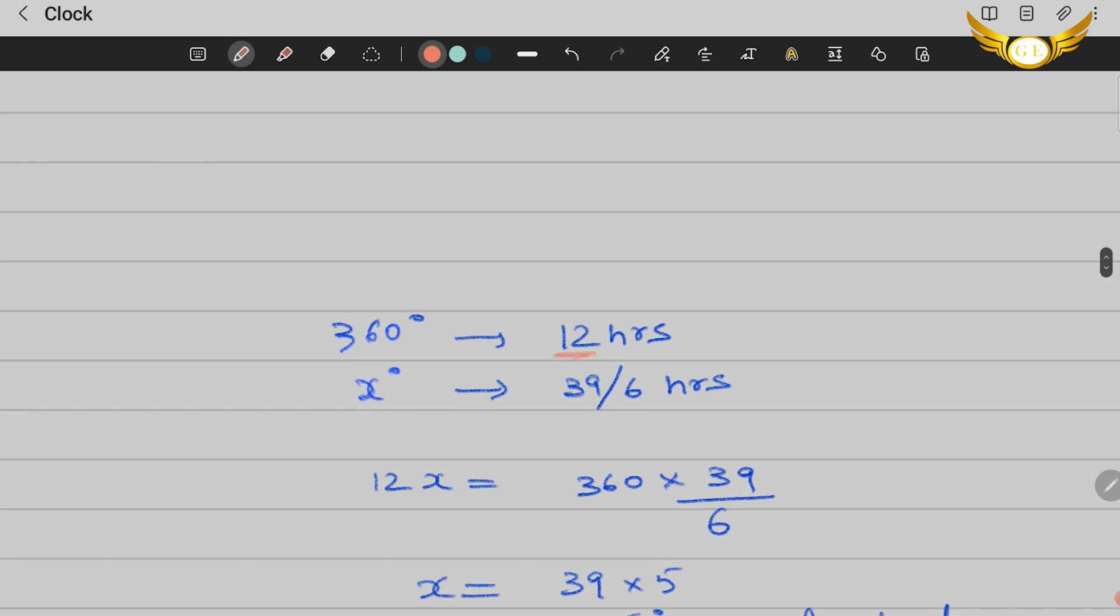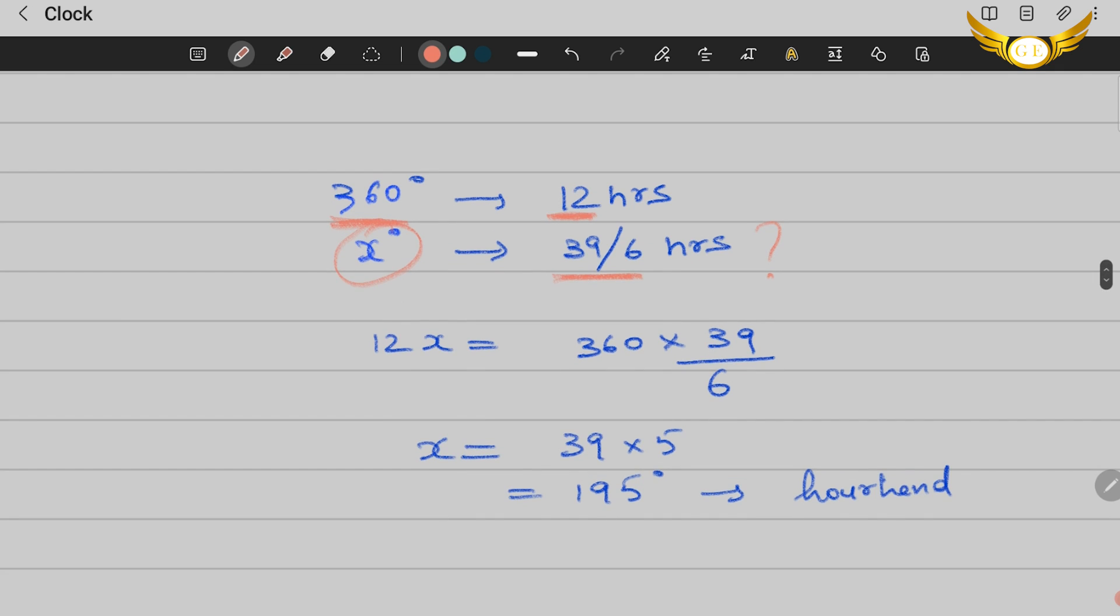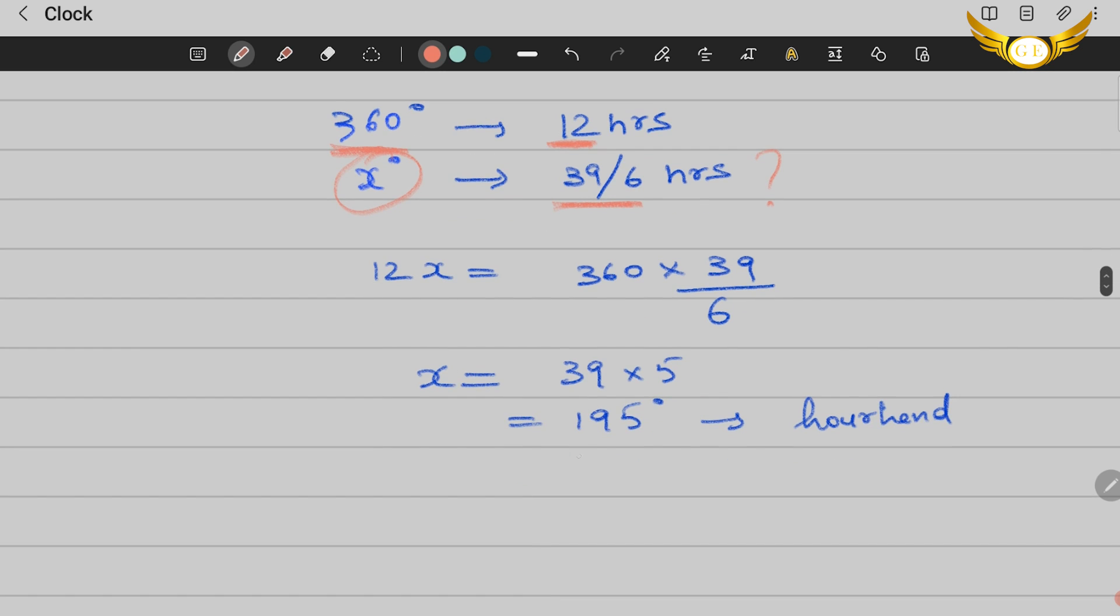The hour needle takes 12 hours for 360 degrees. How many degrees will it finish in 39 by 6 hours? Cross multiply and you get X as 195 degrees. In 39 by 6 hours, this needle goes for an angle of 195 degrees.